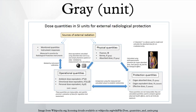The gray is a derived unit of ionizing radiation dose in the International System of Units. It is defined as the absorption of one joule of radiation energy by one kilogram of matter. It is used as a measure of absorbed dose, specific energy, and kerma. It is a physical quantity and does not take into account any biological context.